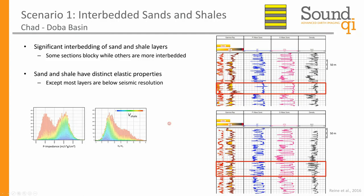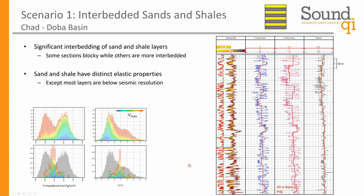The sands and shales have very distinct elastic properties. Looking at a histogram of P-impedance colored by V-shale, the reservoir points have a distinctly different P-impedance compared to the shale points, similarly with the VP/VS ratio. The question is: when we go to the seismic, are we going to see similar effects when we reduce our resolution? To test that, we can upscale our logs to the seismic scale. What we see is that we no longer have this bimodal distribution — everything comes into more of a centralized distribution. And that brings up the question: when we observe impedances at this scale, can we make inferences about the relative proportions of sand and shale?